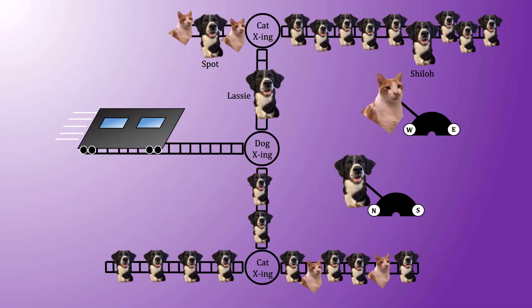If the dog goes north, Lassie is guaranteed to get hit. In contrast, for Spot to get hit, the dog must first choose north, and then the cat must choose west. There's an extra layer of complexity, so it would seem that Spot is less likely to be hit.